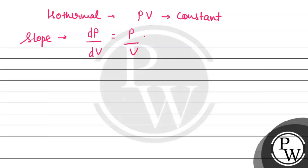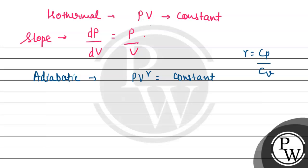Now let us find the slope for the adiabatic curve. For the adiabatic process, PV raised to gamma equals constant, where gamma represents the heat capacity ratio — the heat capacity at constant pressure to the heat capacity at constant volume. We differentiate this to get the slope.